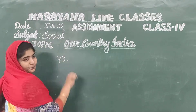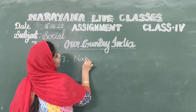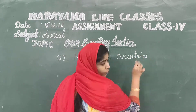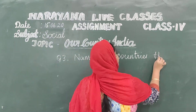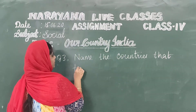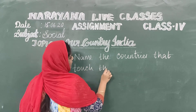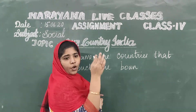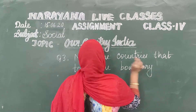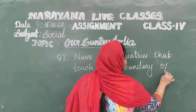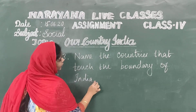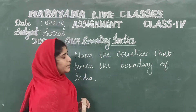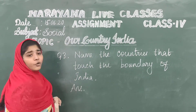Question number 3. We are going to name the countries. A boundary is the corner or edge of a country. Name the countries that touch the boundary of India. This clearly shows our neighboring countries — those countries that share the boundary with India are our neighboring countries. Listen carefully for the answer.